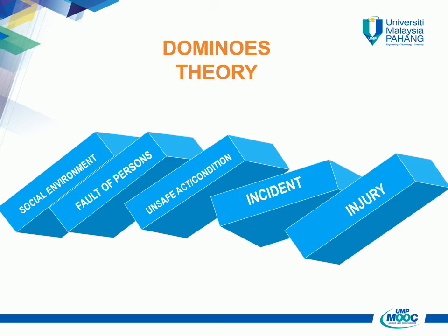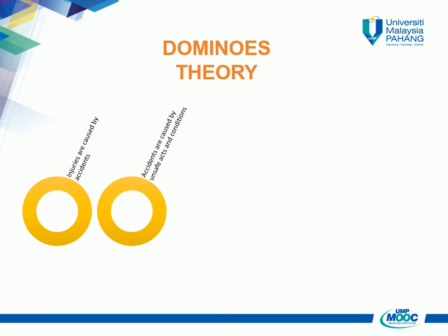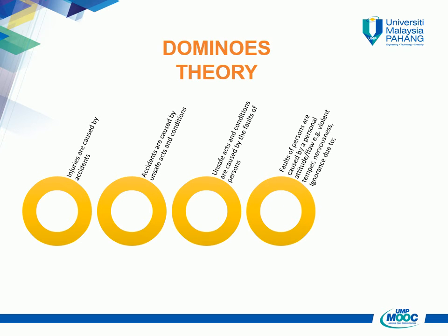In the 1920s, Heinrich studied 75,000 accidents and concluded that 88% of accidents were caused by unsafe acts, 10% by unsafe conditions, and only 2% were unavoidable. The theory is portrayed by five dominoes in sequence, each carrying one factor. Heinrich believed that an injury from an accident is the result of a series of events or circumstances dependent on each other. The root cause is the ancestry and social environment of the worker, leading to undesirable character traits such as recklessness, bad temper, nervousness, and ignorance.